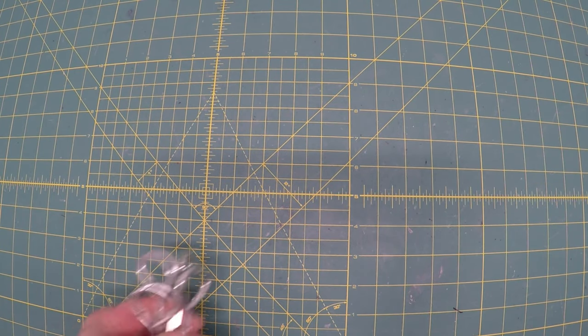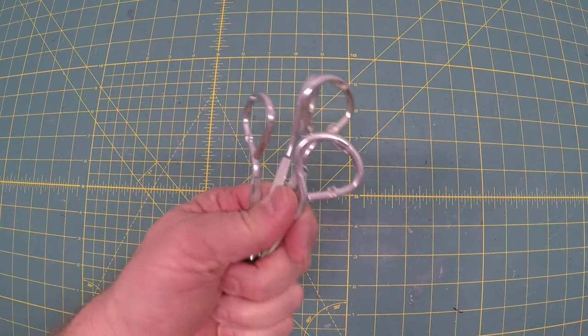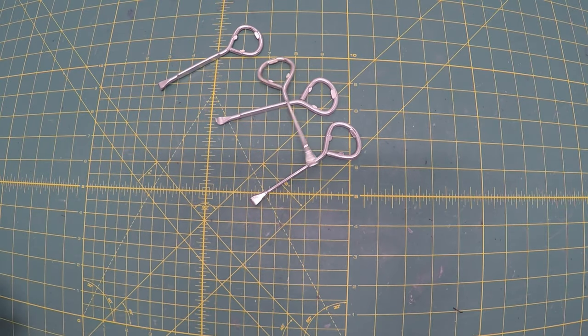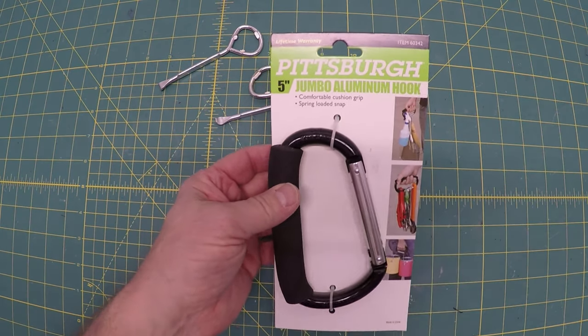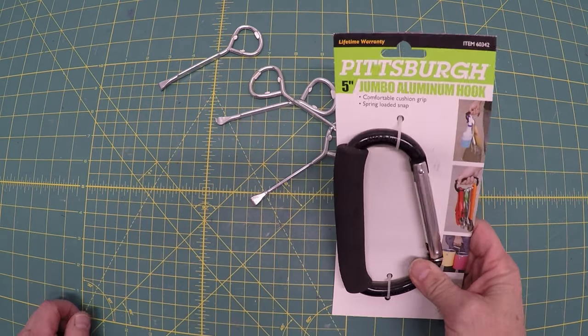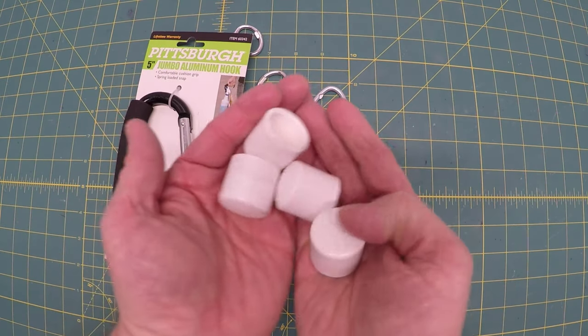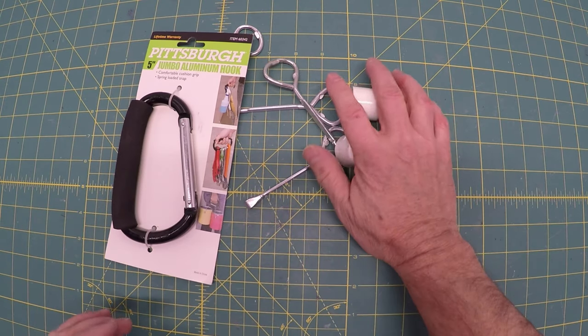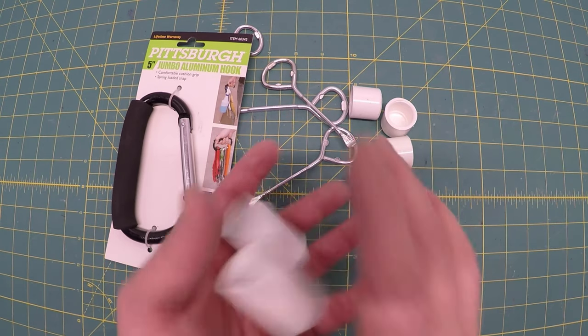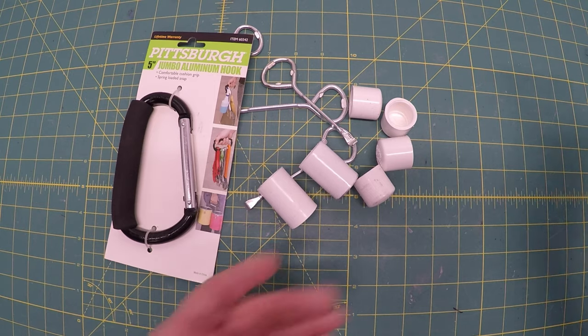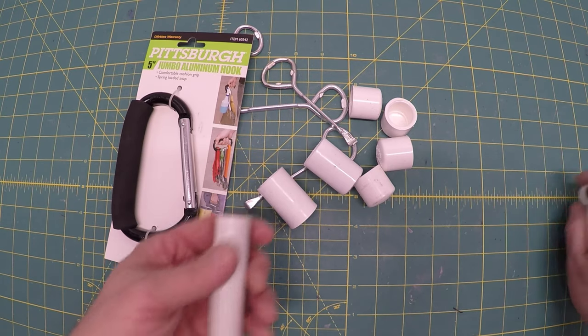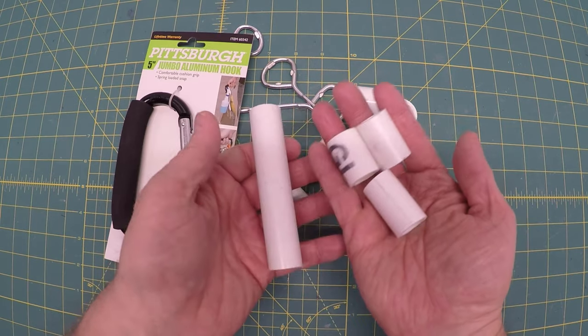Here are the supplies you're gonna need. Three paint bucket openers. This is a jumbo five inch aluminum hook I got from Harbor Freight for under a dollar. End caps for one half inch PVC pipe, couplers one half inch PVC pipe, and various lengths of one half inch PVC pipe.